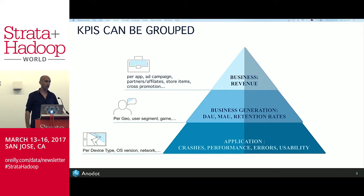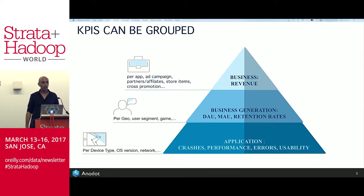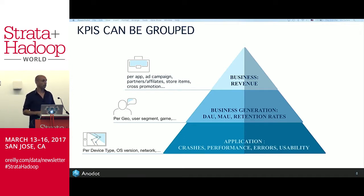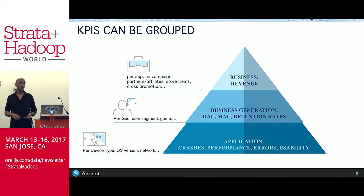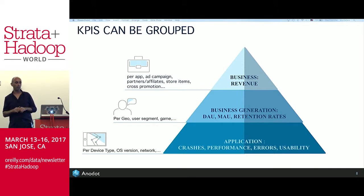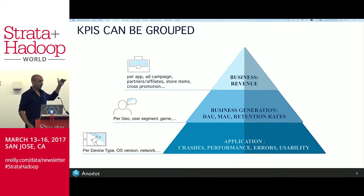You want to measure revenue per app, per ad campaign, per partner affiliate, per store item you sell. If you're looking at users, you want to segment them by geography, user segment by age, and the games they play. One level below business KPIs are application-level KPIs like crashes, performance, errors, and usability. When you break them down to their dimensions, you end up with thousands of KPIs even for a small shop.